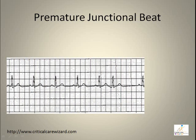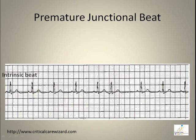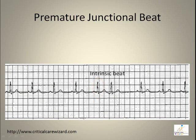A feature of a premature junctional contraction (PJC) is an irregular rhythm. A PJC is an early beat originating from the AV node — a premature beat with either an inverted P wave or no P wave, followed by a compensatory pause.